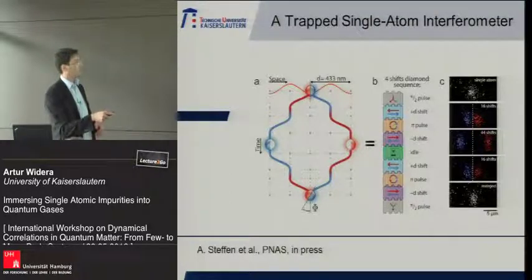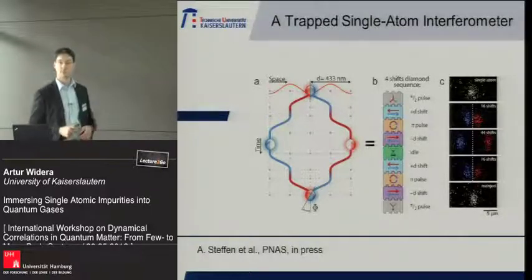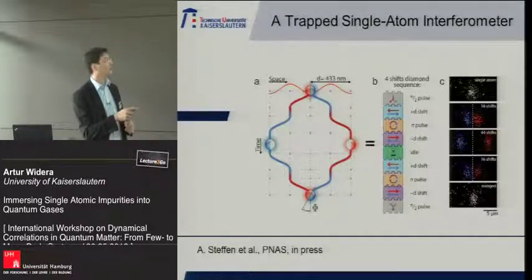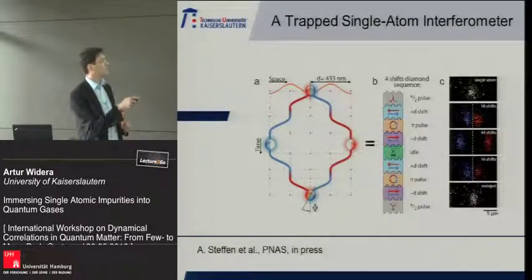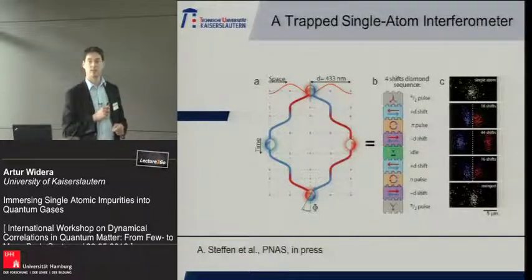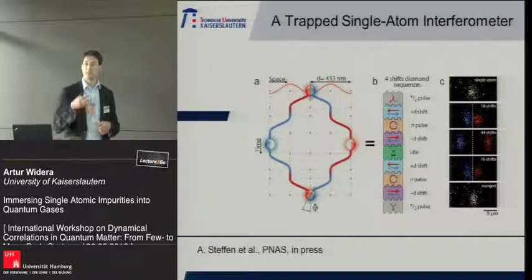There, the two arms can acquire a phase difference. We then recombine them and read off the phase difference in a Ramsey-type interferometer — very analogous to a Mach-Zehnder interferometer, where two light beams travel along different paths and you read off the phase difference as bright or dark interference fringes.